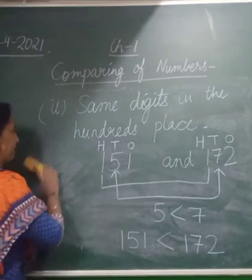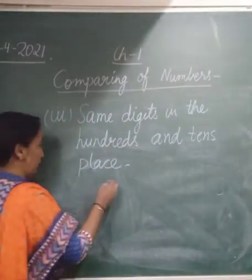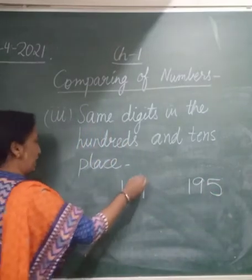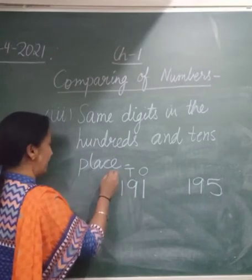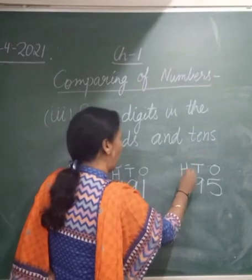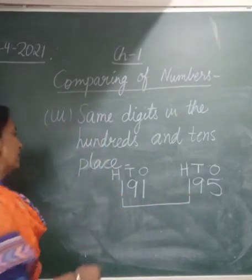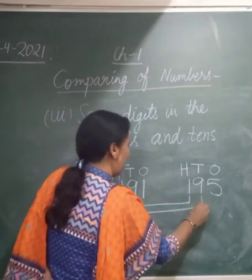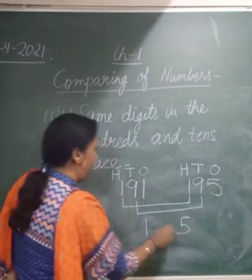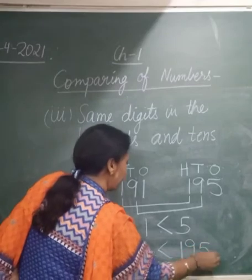Now let's take the third case: when we have the same digits in the 100's and 10's place. Let's take an example — 191 and 195. Here at 1's place we have 1, at 10's place 9, and at 100's place 1. And in this one at 1's place we have 5, at 10's place 9, and at 100's place 1. At 100's place we have the same digits. Now we move on to 1's place — here at 1's place we have 1 and here at 1's place we have 5. And 1 is less than 5, therefore 191 is less than 195.